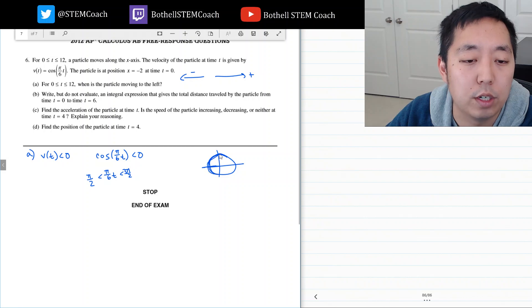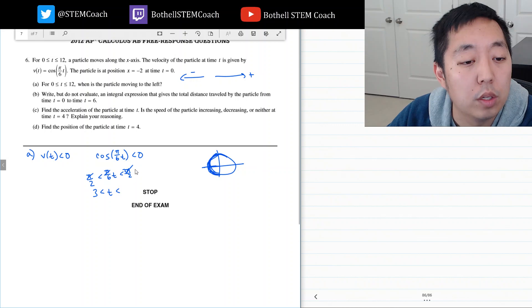So I'm going to multiply through by 6 and divide by pi. I get 3 is less than t is less than 9.